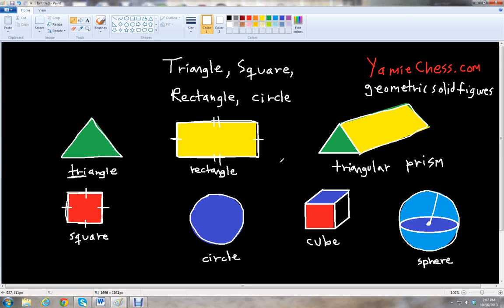And then finally we come to our last shape, the round shape called the circle. And unfortunately the circle has no sides, but it's still a very special shape. And we'll see why that is when we do the geometric solid figures.